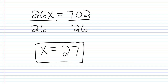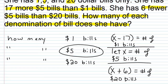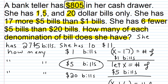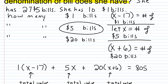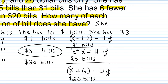We're not done — we have to make sense of X. X represented the number of $5 bills, so she has 27 $5 bills. How many ones? It's X minus 17: 27 minus 17 is 10, so she has 10 $1 bills. How many $20 bills? It's X plus 6: 27 plus 6 is 33, so she has 33 $20 bills.